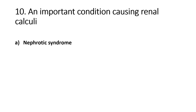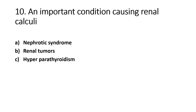An important condition causing renal calculi: Option A - Nephrotic Syndrome, Option B - Renal Tumors, Option C - Hyperparathyroidism, Option D - Hypertension. The right answer is Option C, Hyperparathyroidism. Hyperparathyroidism causes hypercalcemia, which leads to calcium stone formation.